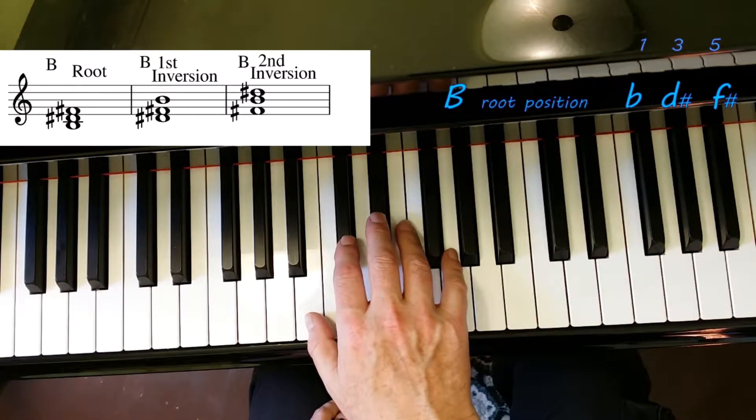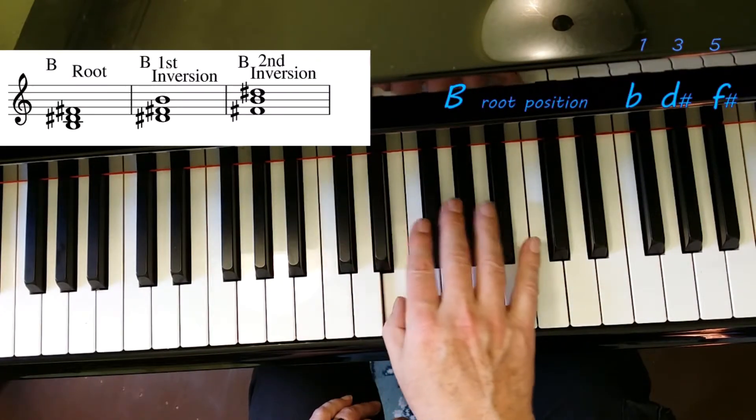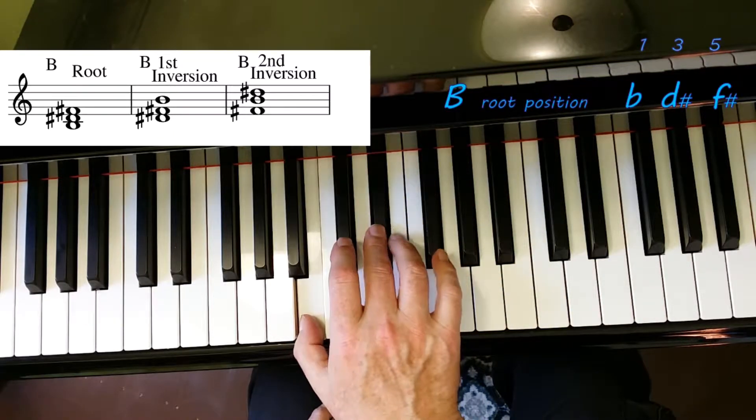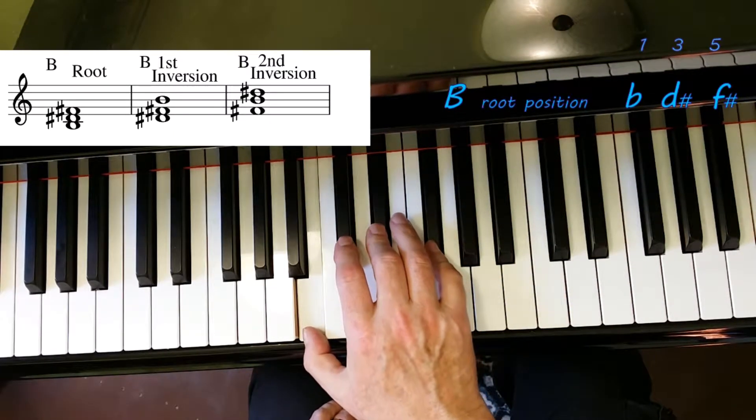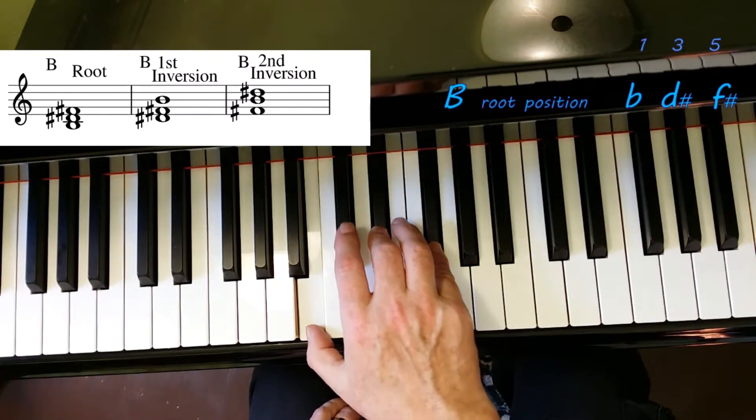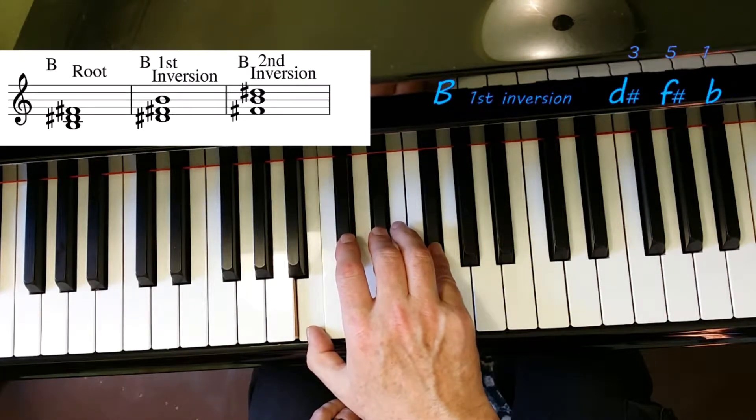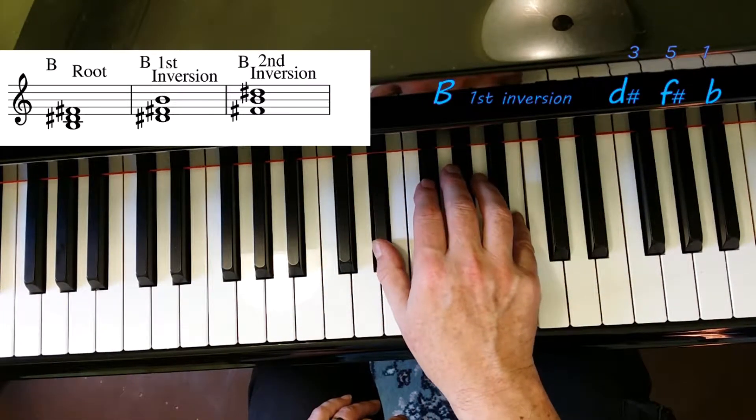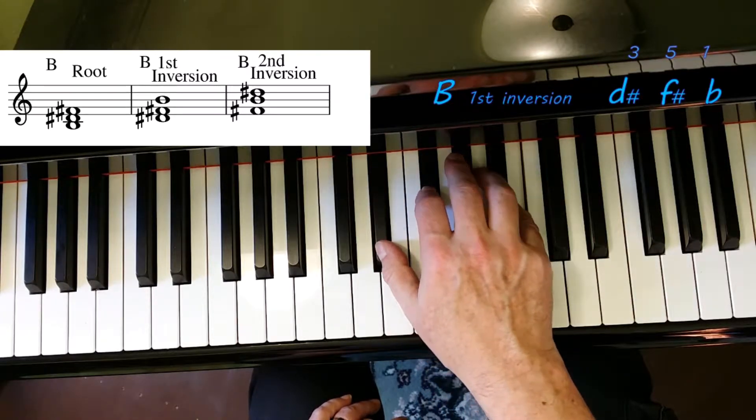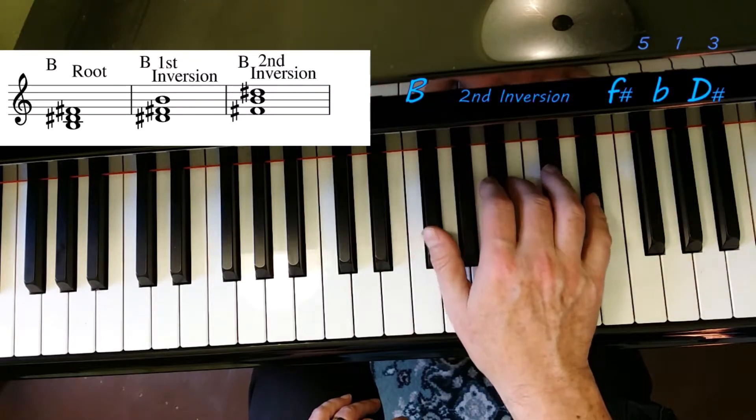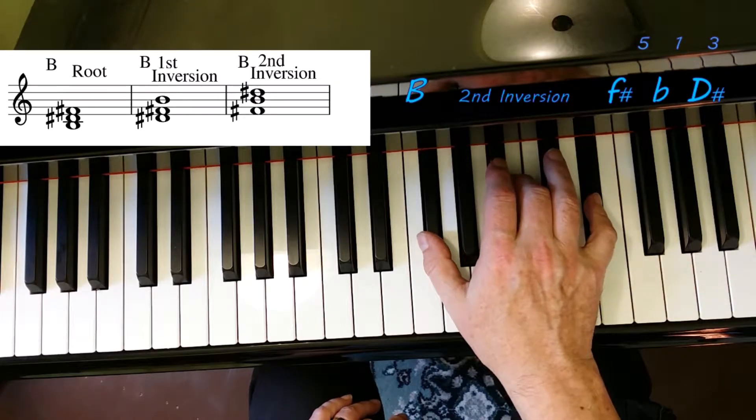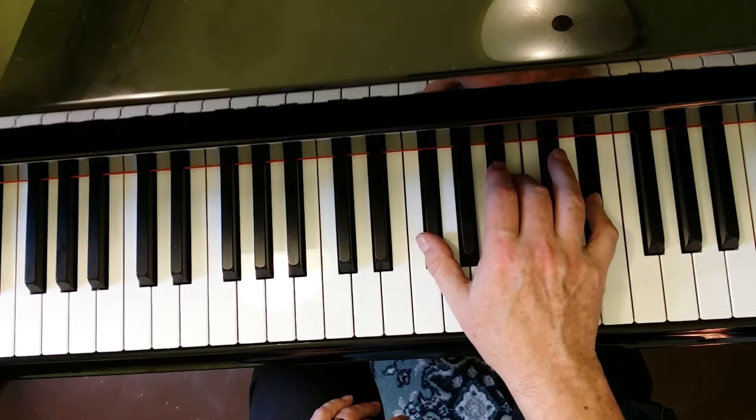Let's go to five sharps: B major. Four, five, six, seven, eight. One, three, five. Two sharps in this chord: B, D sharp, F sharp—B root position. B, D sharp, F sharp. One, three, five. B major, first inversion. And then B, D sharp, F sharp—same notes all the time, just different order. Second inversion.